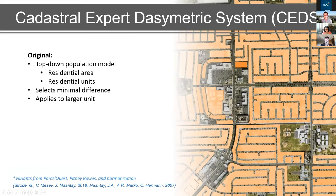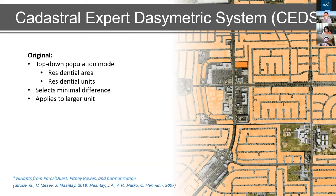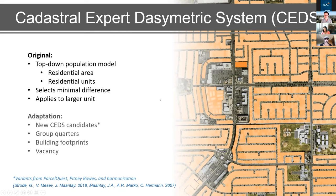That brings us to SEDS — the Cadastral Expert Dasymetric System. As originally posed by Georgiana Strode and Giuliana Mente, it's a top-down population distribution model where you start with a larger unit and distribute population according to residential area and residential units held at parcel level. You compare two parcel-level estimates against the finest known unit to determine which has minimal difference, select a methodology per parcel, aggregate to block group level, and select the most frequently used methodology for the entire block group.